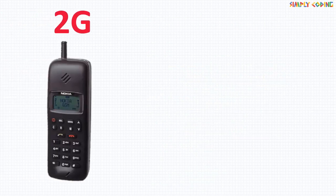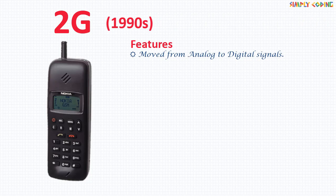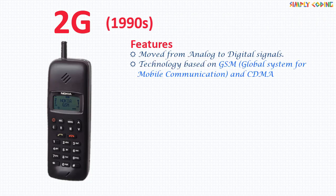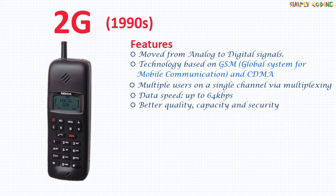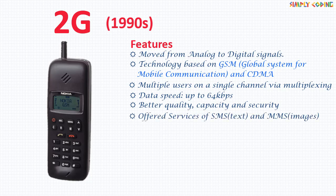Cell phones received their first major upgrade when they went from 1G to 2G. 2G was launched in the 1990s. The voice transmission moved from analog to digital signals. Technology was based on GSM — Global System for Mobile Communication — and CDMA. 2G capabilities were achieved by allowing multiple users on a single channel via multiplexing. Data speed was up to 64 kbps. It provided better quality, capacity, and improved security. It introduced services such as SMS, which refers to text messages, and MMS, which refers to messages with a picture or a video.